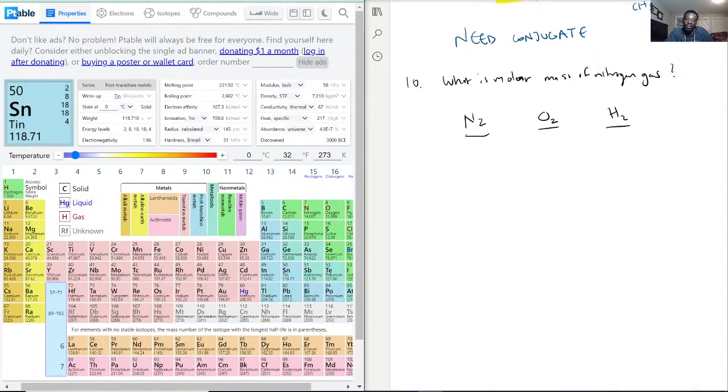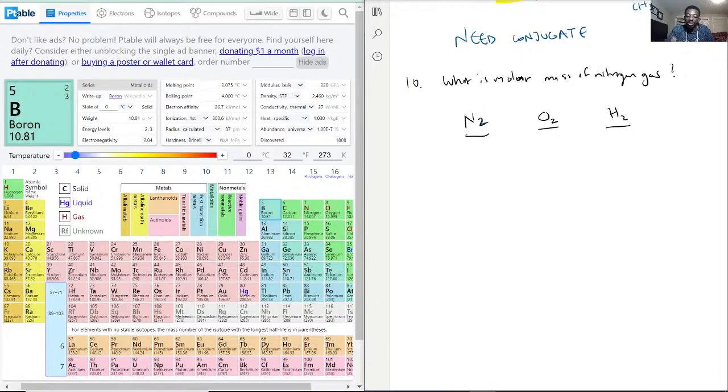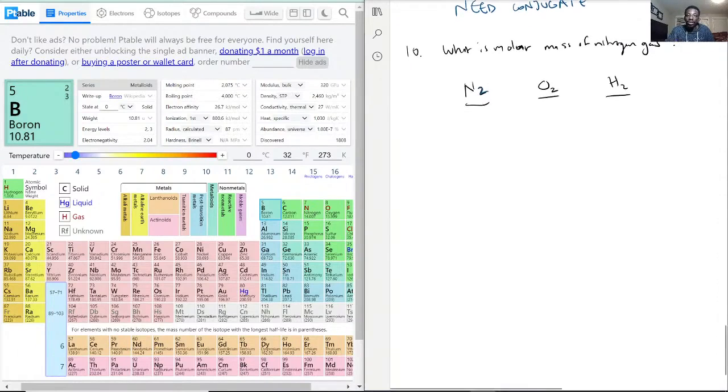Now with that being said, they're asking for the molar mass of nitrogen gas. If you remember what we did with the previous question, we list our constituents and then we add the subscript to know how much we're multiplying by, and then the molar mass of the individual element. So nitrogen gas N2, we have nitrogen, 2 of them, and then 14.007.